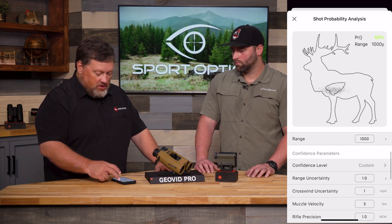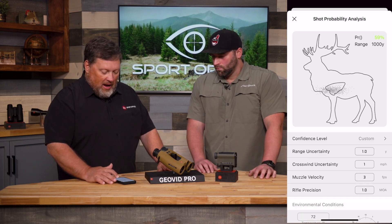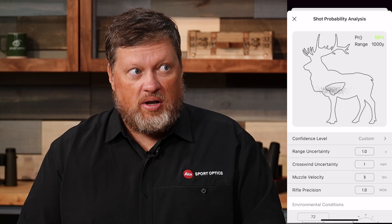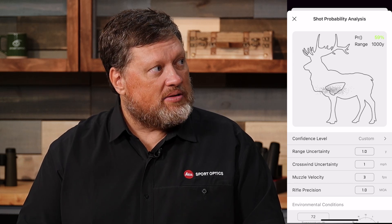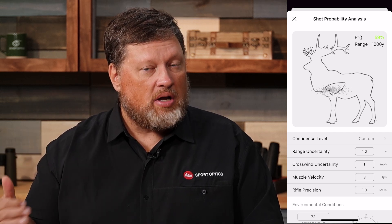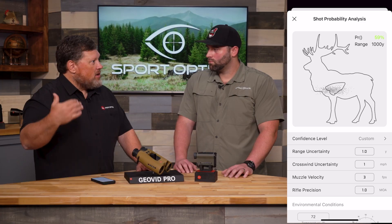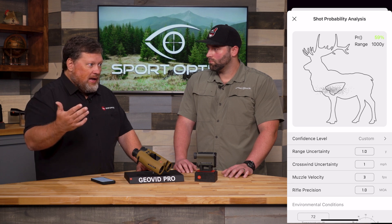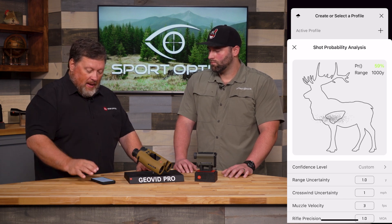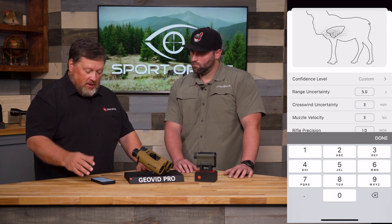So I set up my target for what I'm going to be shooting at. Next is confidence parameters — you're going to want to adjust that to custom from low. I don't like the presets — low, medium, or high. I want to always put in my own data. Range uncertainty asks me how accurate I am at ranging distance. Even a laser rangefinder is not going to be absolutely pinpoint precise at 1,000 yards. Leica makes some of the best rangefinders in the world, but our plus-minus accuracy at 1,000 yards is 0.5% — half a percentage point — so that's 5 yards of plus-minus uncertainty at 1,000 yards.